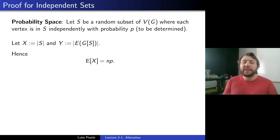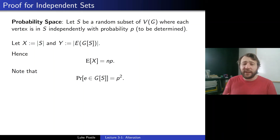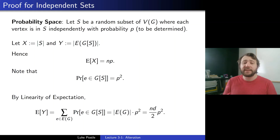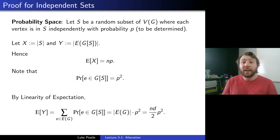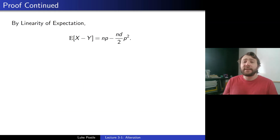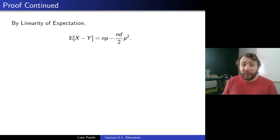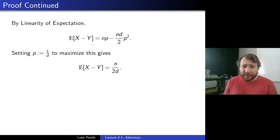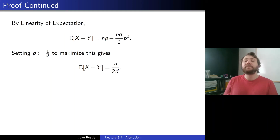E[X] equals NP. The probability that an edge E is in G[S] equals P squared, so by linearity of expectation, E[Y] equals the number of edges in G times P squared, which is ND/2 times P squared. By linearity again, E[X minus Y] equals NP minus ND/2 times P squared. We maximize this difference by setting P equal to 1/D, giving E[X minus Y] equal to N over 2D.